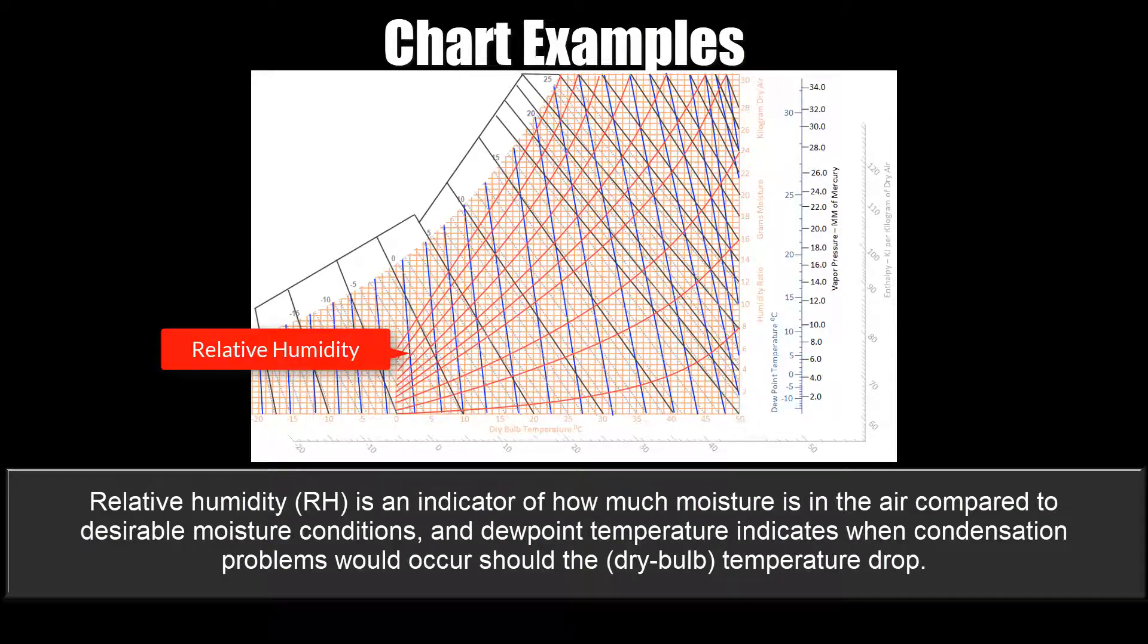Relative humidity, or RH, is an indicator of how much moisture is in the air compared to desirable moisture conditions. And dew point temperature indicates when condensation problems would occur should the dry bulb temperature drop.